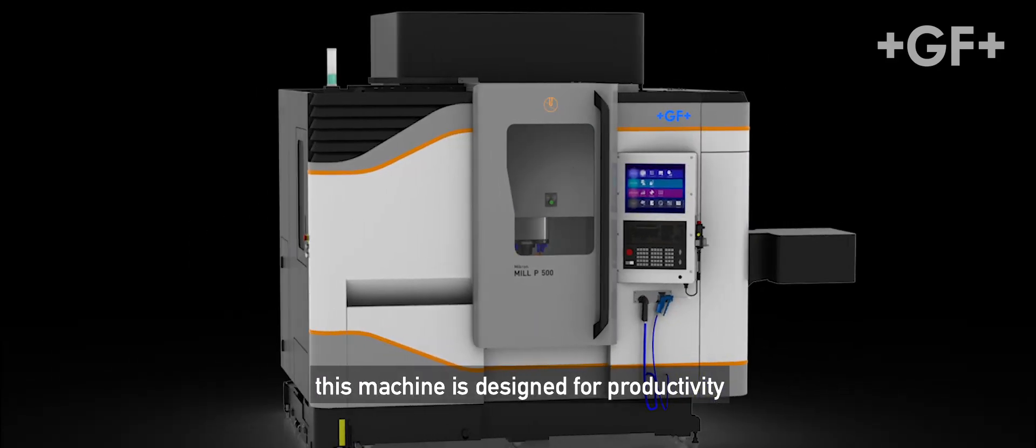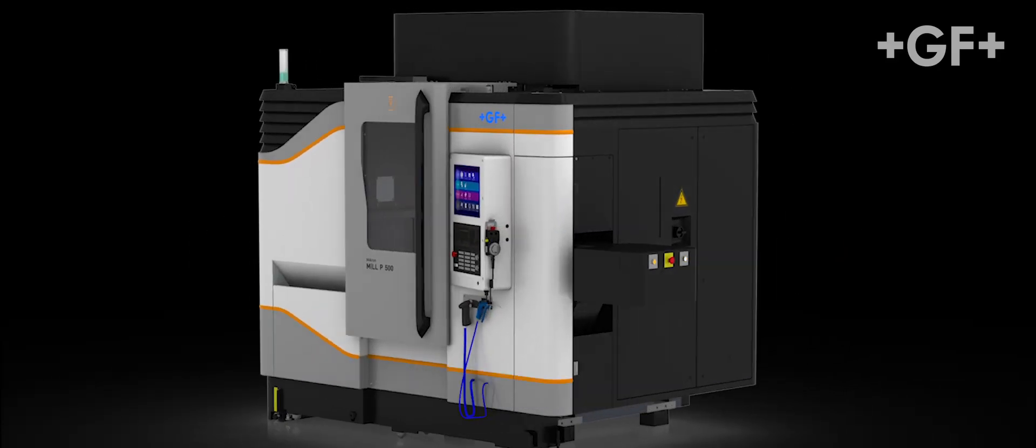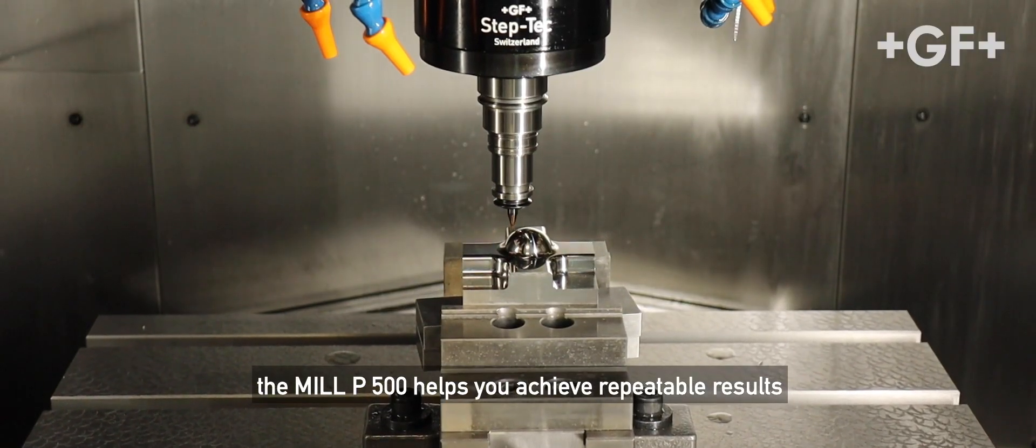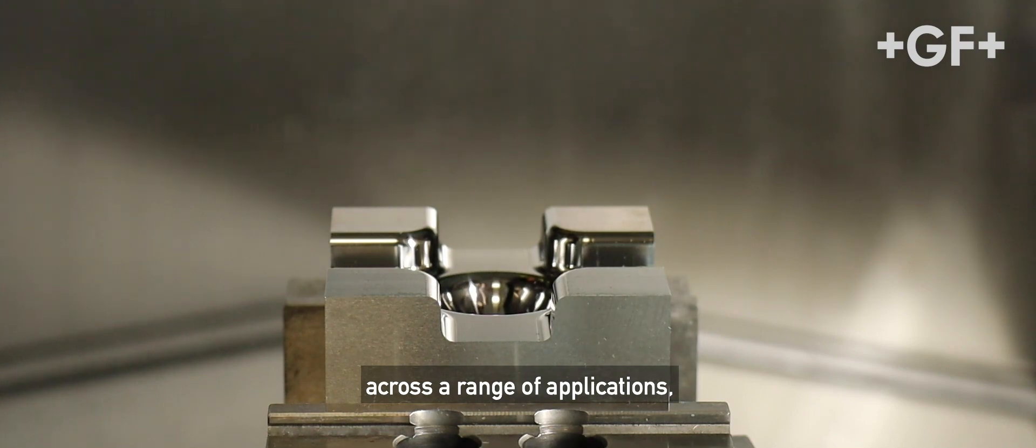This machine is designed for productivity and performance. From roughing to fine finishing, the Mill P500 helps you achieve repeatable results across a range of applications.